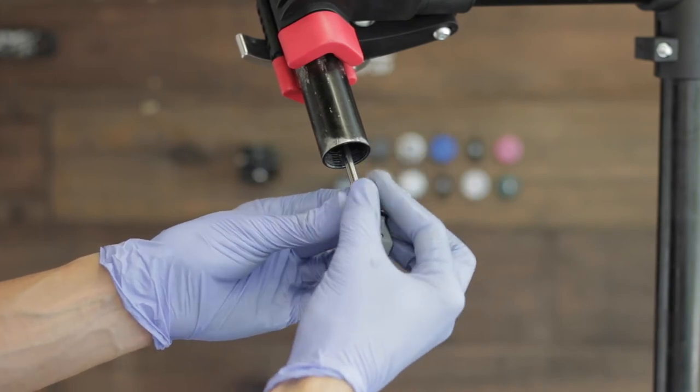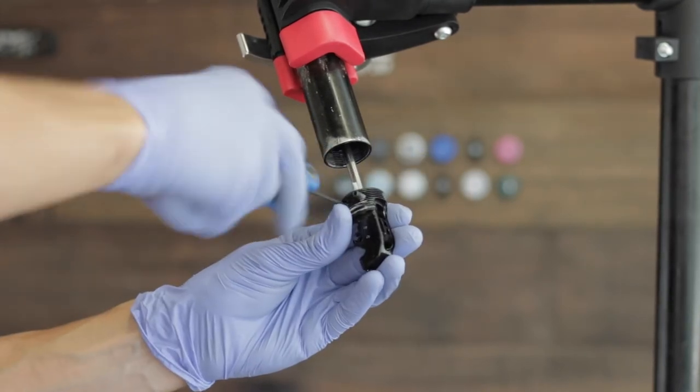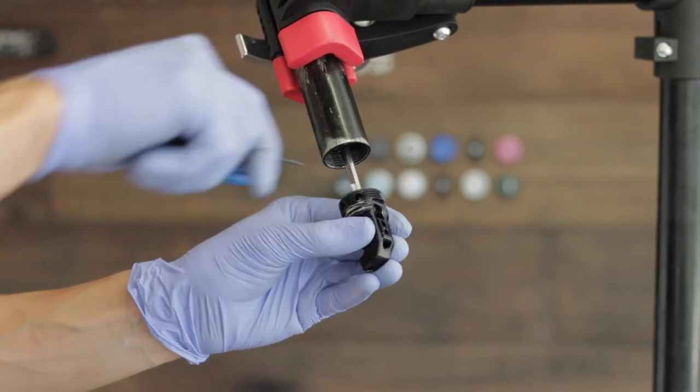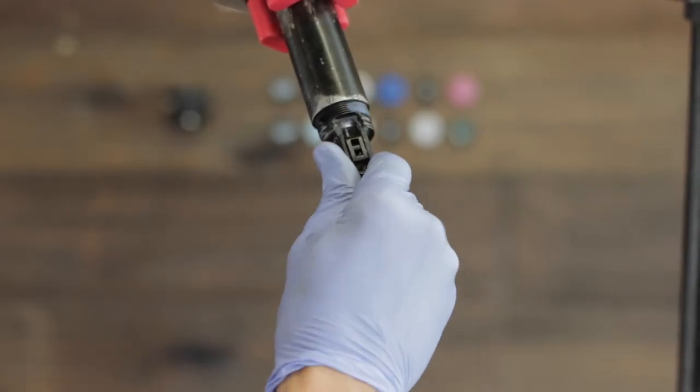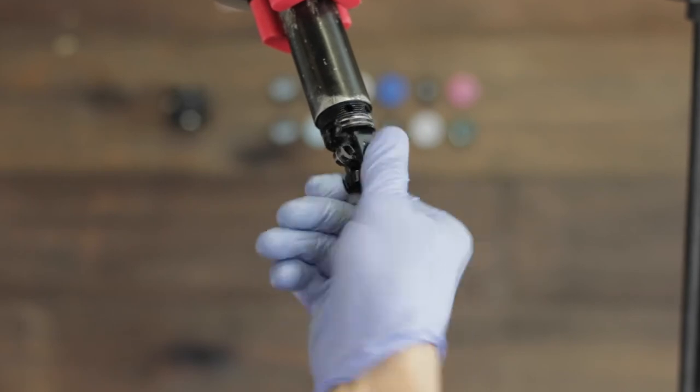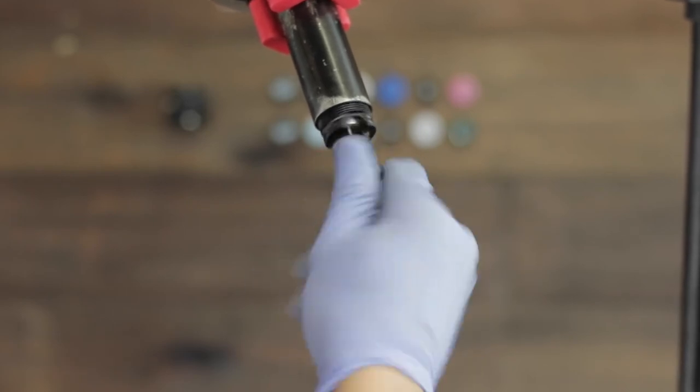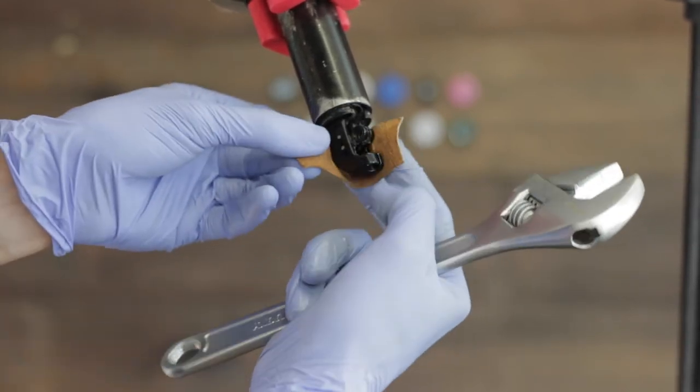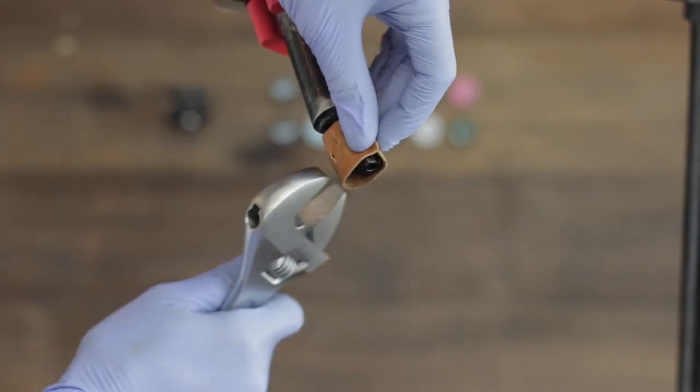Slide over the lower mechanism and insert the two grub screws. Tighten these up with a 2mm allen key. Slide the lower mechanism towards the upper tube and screw it in. Use your piece of leather and shifting spanner to do the final tightening.